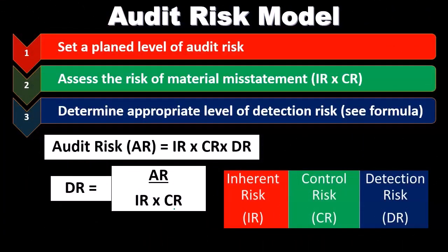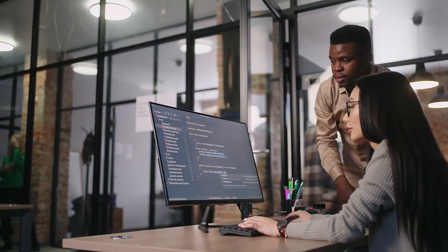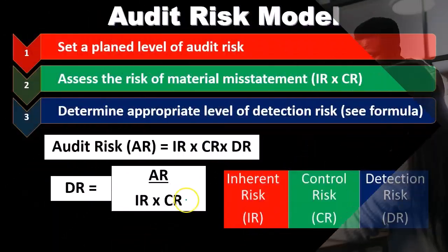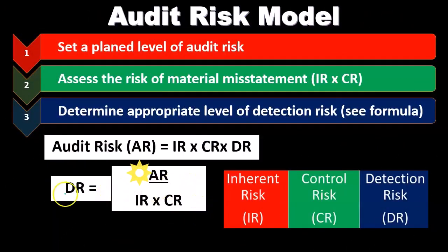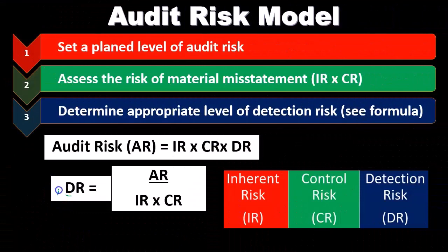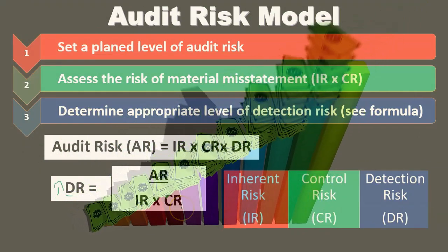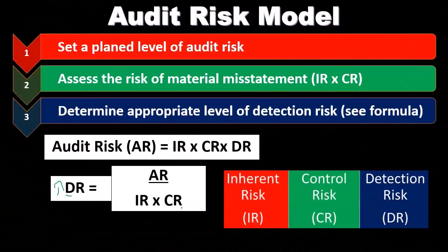If both inherent risk and control risk are low, the numerator of our equation is lower, resulting in a higher calculated detection risk. This makes sense — with sound internal controls and a less risky environment, we can do less testing in our audit and still be okay. In terms of audit procedures, a higher detection risk actually means we're doing less work, depending on the sound environment and sound controls.